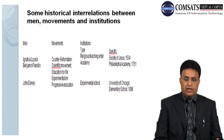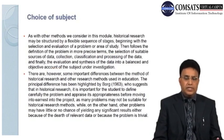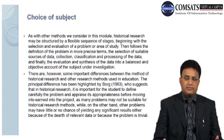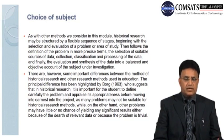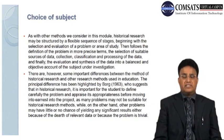As with other methods, historical research may be structured by a flexible sequence of stages, beginning with the selection and evaluation of a problem or area of study. Then follows the definition of the problem in more precise terms, the selection of suitable sources of data, data collection, classification and processing of the data, and finally, the evaluation and synthesis of the data into a balanced and objective account of the subject under investigation.